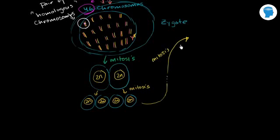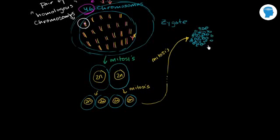So mitosis is just going to keep happening, and eventually you're going to have thousands of these cells, and eventually millions and tens of millions of them. Each of them is going to have the diploid number of chromosomes — 46 chromosomes, 23 pairs of homologous chromosomes. So we now have a big ball of these here.